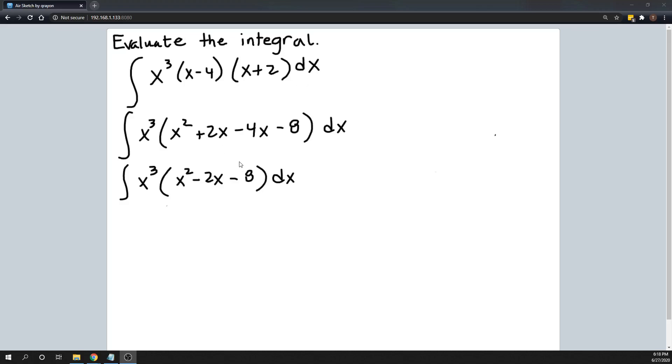So this is now as simplified as I can get it. And then what I want to do is to distribute this x cubed through the parenthesis like so. So when I do that, I will get x to the fifth minus 2x to the fourth minus 8x cubed.